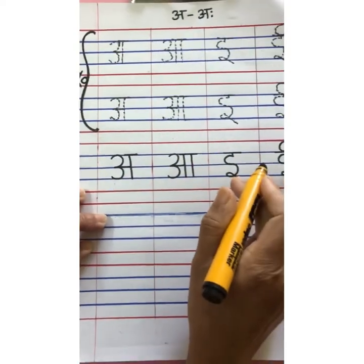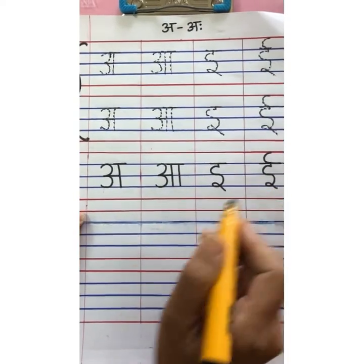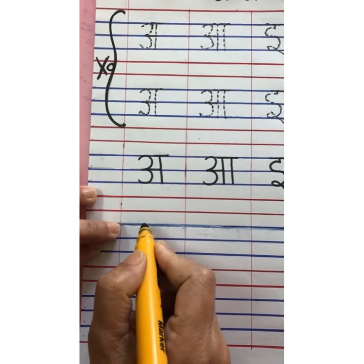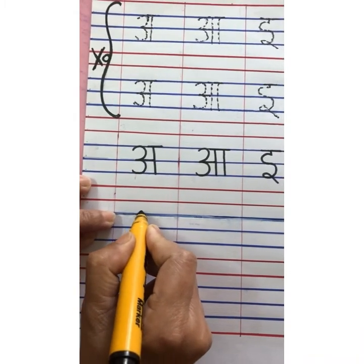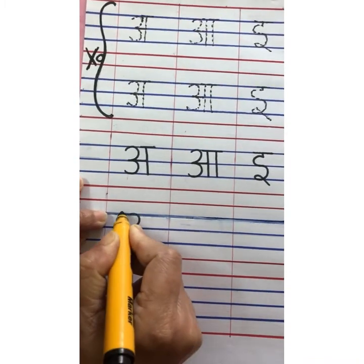A, A, A, A, I, E, E. Then comes chota U. So write chota U within this three blue lines.